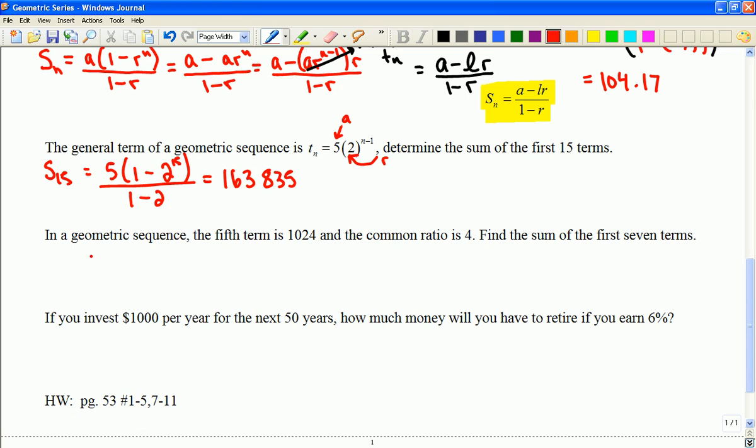In a geometric sequence, the fifth term is 1024 and the common ratio is 4. So I'm going to use my term formula to try and figure out the missing piece, which is what's the first term. So if I know that 1024 is the fifth term, it must be the first term times the common ratio applied four times. So that means 1024 is 256 times the first term. So the first term must be equal to 4. Now I can use my formula. The sum of seven terms will be 4 times 1 minus 4 to the seventh over 1 minus 4. And that gives me 21,844.